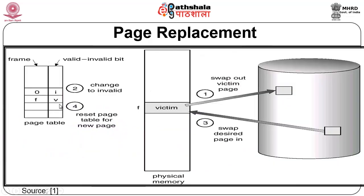A diagram illustrates page replacement: in the page table entry, frame F is valid and frame O is invalid. The victim frame F is swapped out to secondary storage and the desired page is swapped in to that location, with the valid-invalid bit updated accordingly.